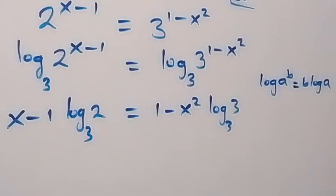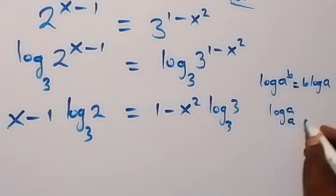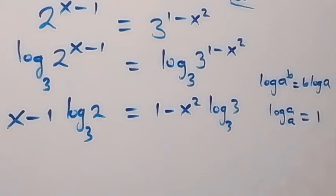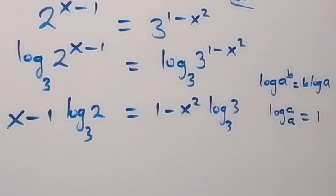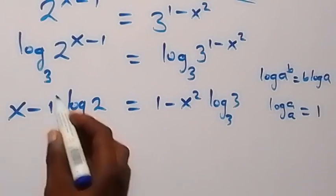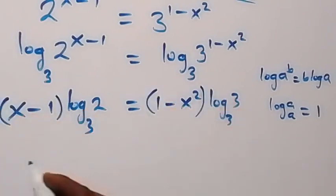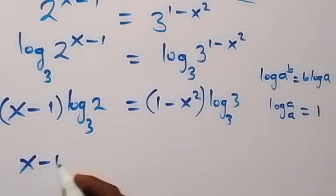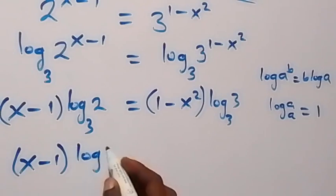Now, log base 3 of 3 here — from the rule that when we have log base a of a, this gives us 1. So log₃3 becomes 1. What we have left here will be x minus 1 times log₂ base 3 equals 1 minus x squared.